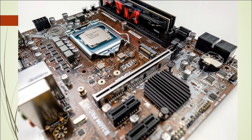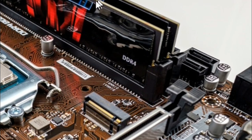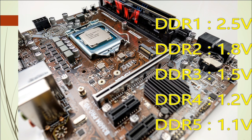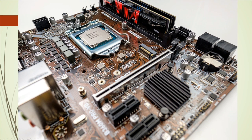Here is the RAM — this is a DDR4 RAM. We have more than four types of RAM. The DDR4 has a power of 1.1 volts, DDR3 is 1.5 volts, DDR2 is 1.8 volts, and DDR1 is 2.5 volts.